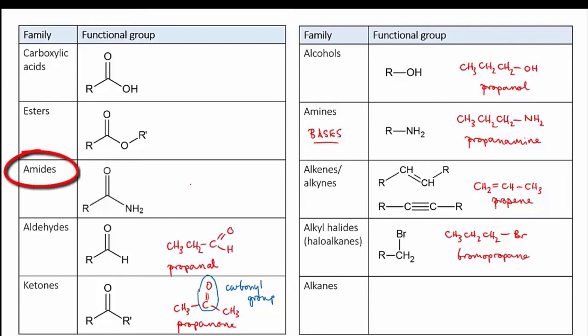Next are the amides. Here you take a carbonyl group and you join an amine to it, and together that makes an amide. This molecule is propanamide.